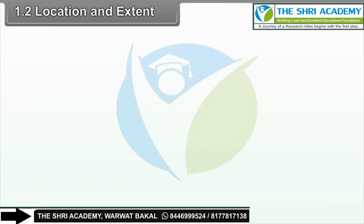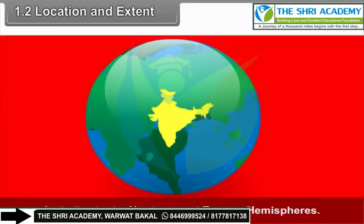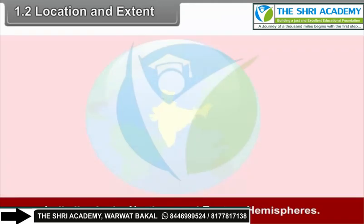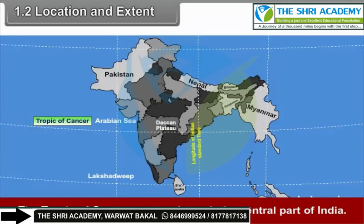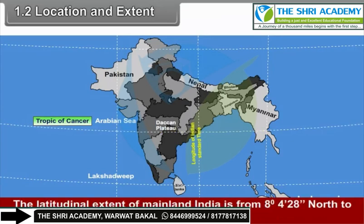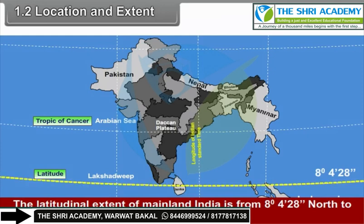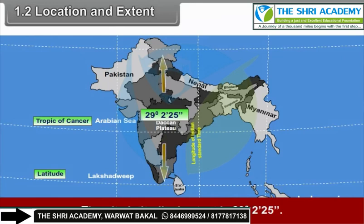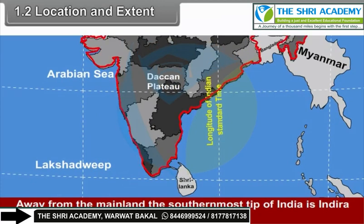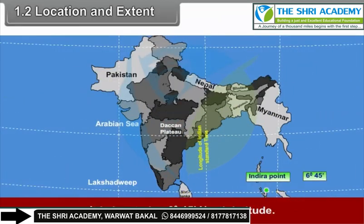India lies in the northern and eastern hemispheres. It has a central position in the southern part of the ancient continent. The Tropic of Cancer passes through the central part of India. The latitudinal extent of mainland India is from 8°4'28" north to 37°6'53" north. The southernmost tip of India is Indira Point, located in the Nicobar Islands at 6°45' north latitude.